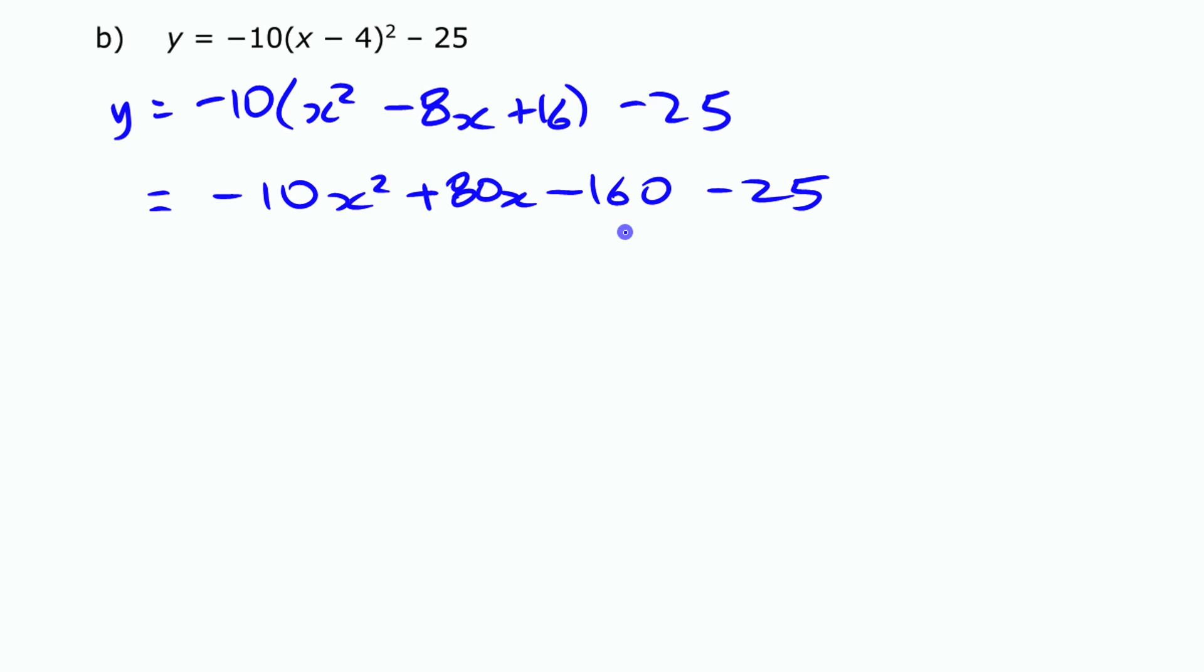And then last step, just combine those two things together. So we've got negative 10 X squared plus 80 X minus 185. All right. Again, this final equation of that function is equivalent to this beginning one. They're just written in different forms.